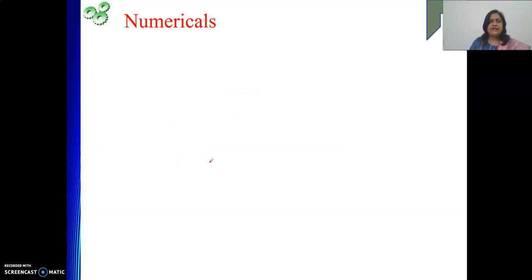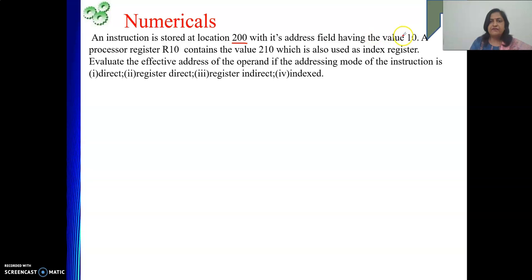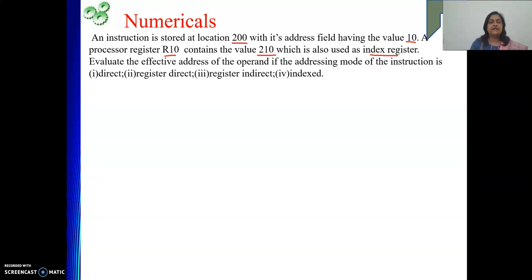Address field of the instruction holds your offset or displacement — meaning how far your target is located from the updated value of PC. Now we will start with the next numerical. An instruction is stored at address 200 with address field value 10, so at location 201 the value 10 is stored. A processor register R10 contains the value 210, which is also used as the index register.